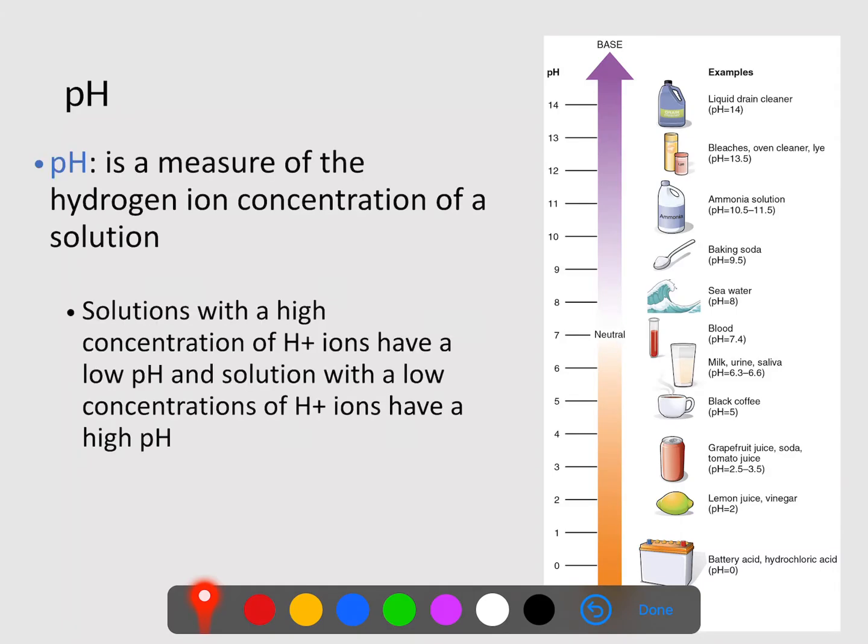Now, pH is just simply a measure of the hydrogen ion concentration in the solution. So if we look, neutral is seven. That would be like water. As we increase in pH, we become what's known as more basic. Basic things are things like liquid drain cleaner, bleaches, oven cleaner. And then if we go the other way, if we go lower than seven, we become more acidic.